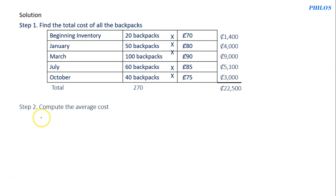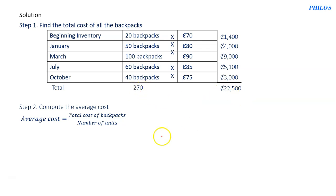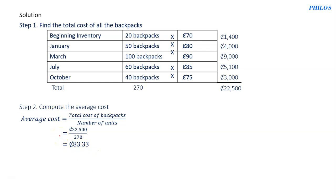In step two, we find the average cost. The formula for average cost is total cost divided by the number of units. Since the total cost is 22,500 and the number of units is 270, we substitute: 22,500 divided by 270. When you put this on your calculator you get 83.333, so 83.333 is the average cost.